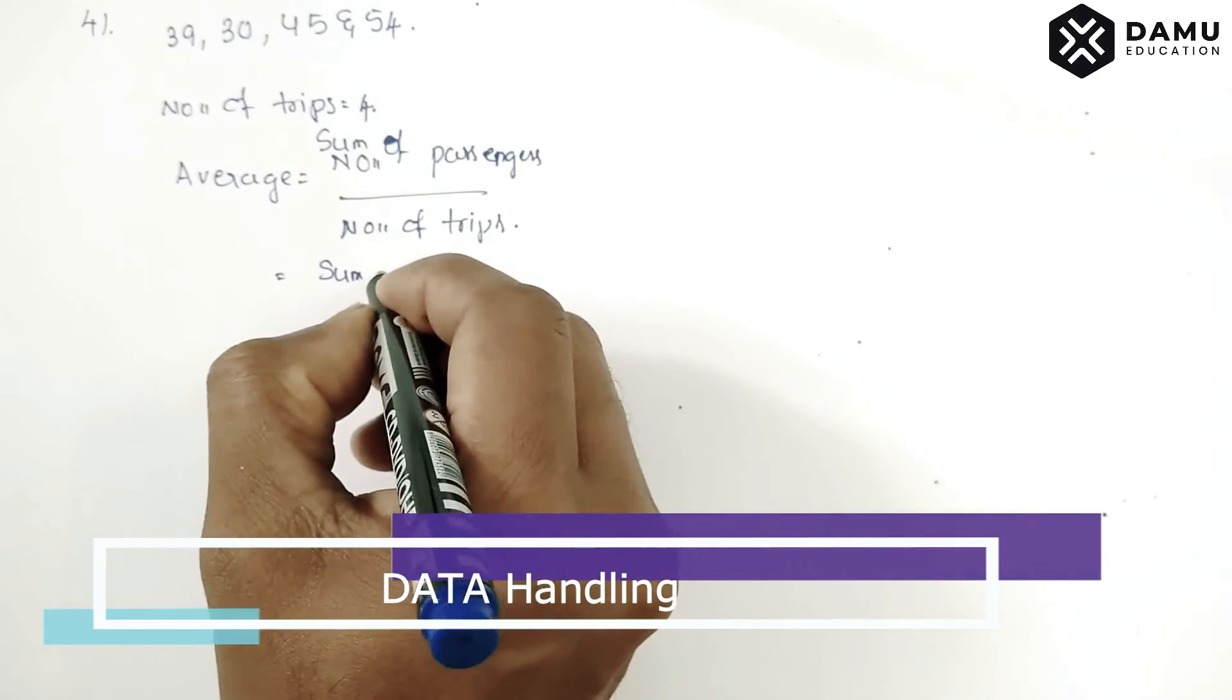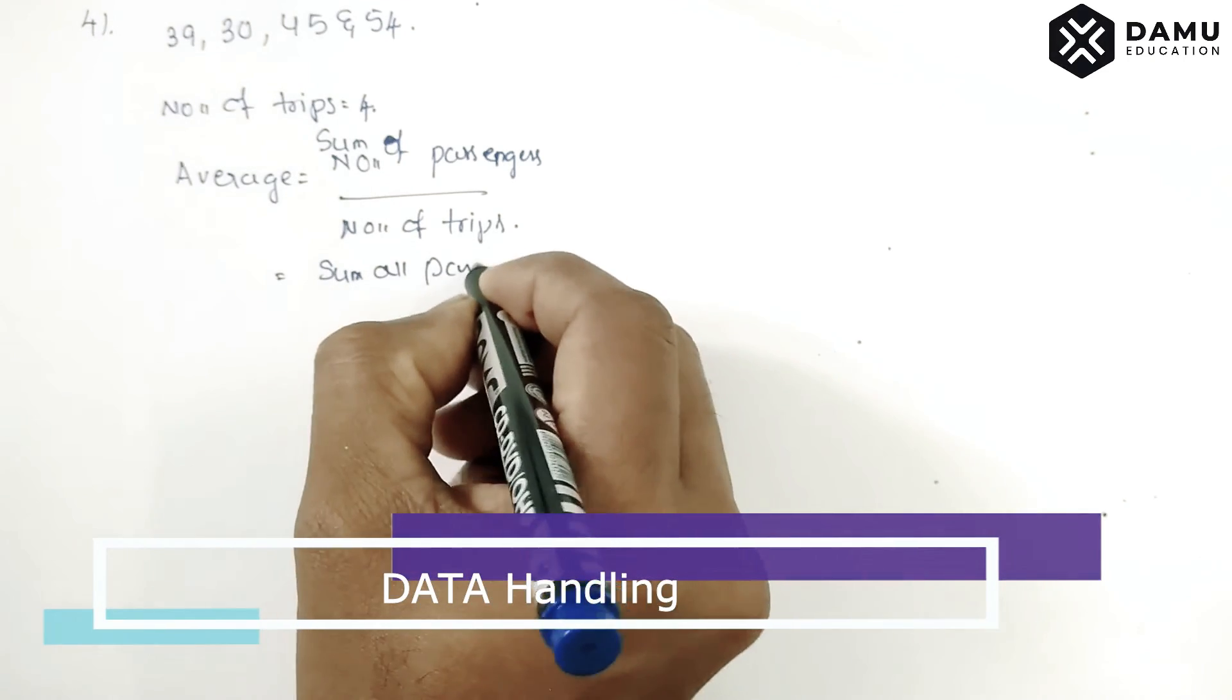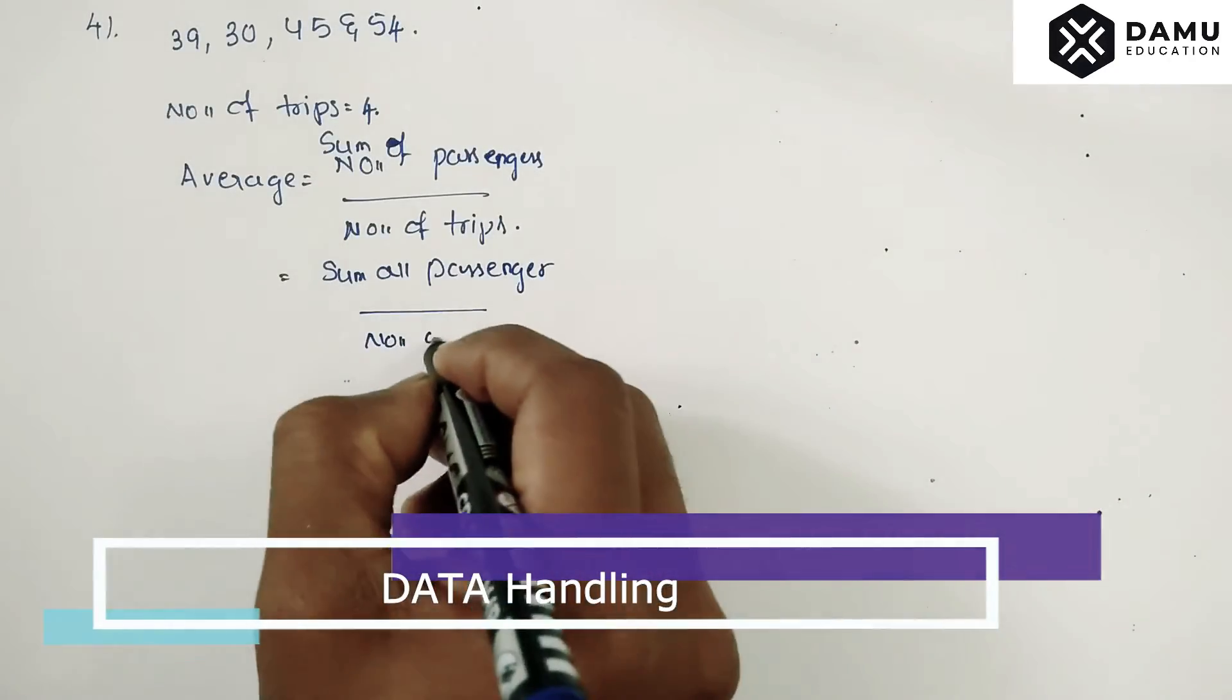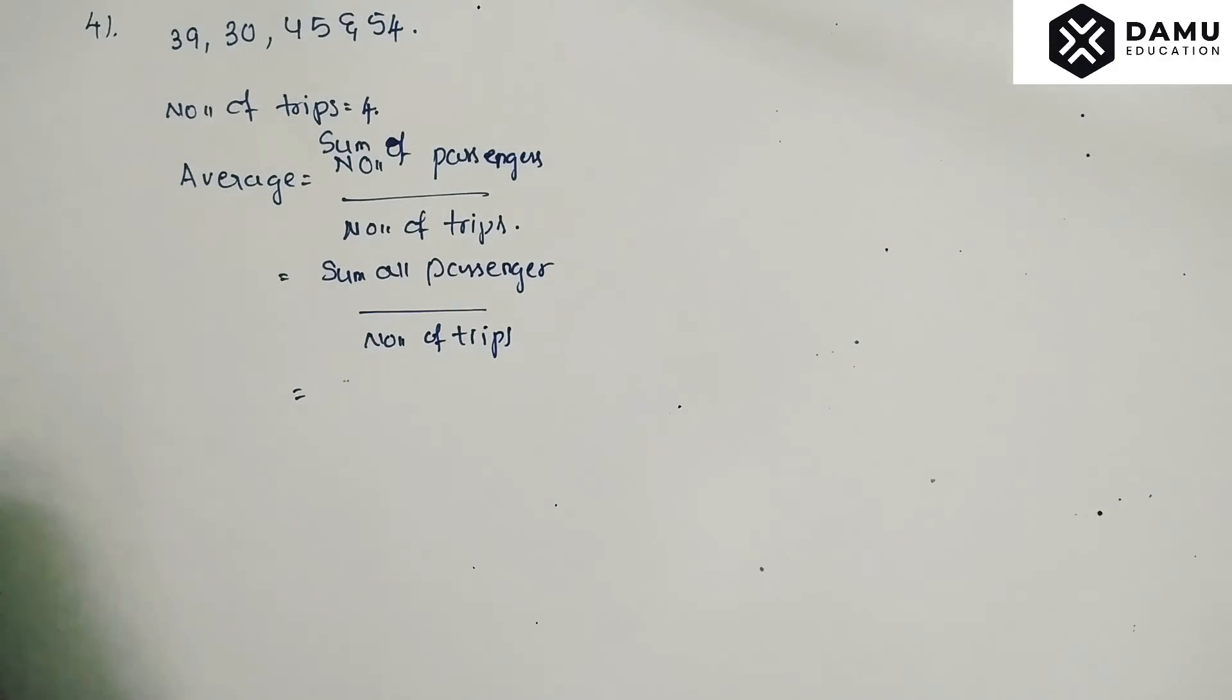So sum of all passengers, sum of all passengers by number of trips. So sum of all the number of passengers will be 30 plus 39 plus 45 plus 54.